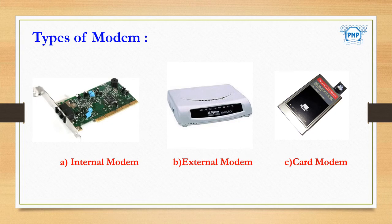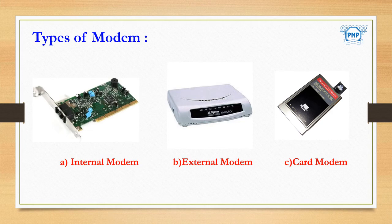The transmission speed of a modem is the amount of data it can send per unit time, measured in bps — bits per second. There are three important types of modems. The first is the internal modem, which is a printed circuit board mounted directly on the motherboard inside the CPU cabinet. When you open your computer you will find it attached to the motherboard.